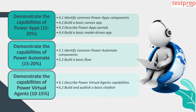Topic 5: Demonstrate the capabilities of Power Automate, which comprises 15 to 20 percent weightage in the exam. This includes: 1. Identify common Power Automate components; 2. Build a basic flow.